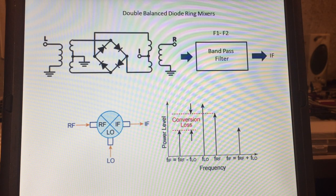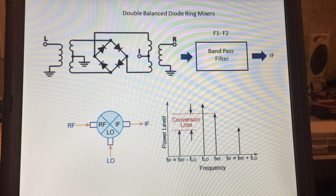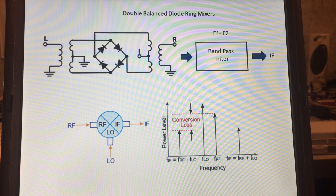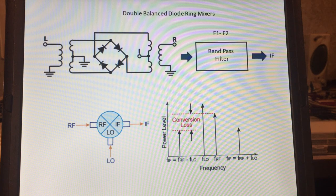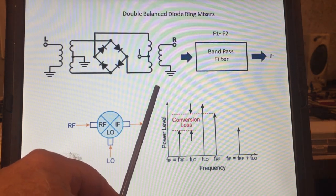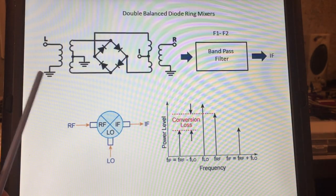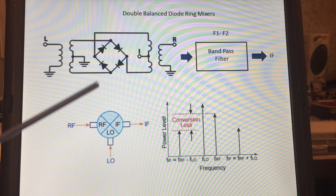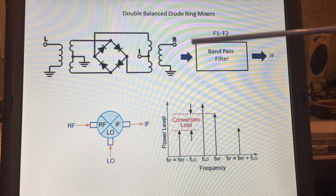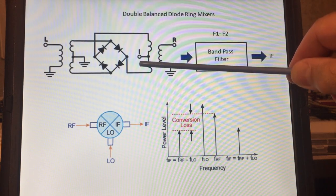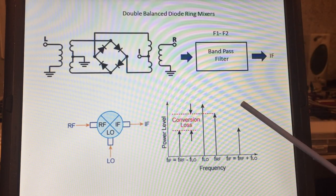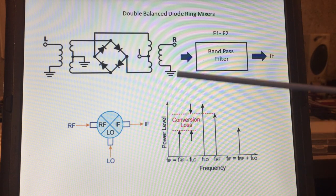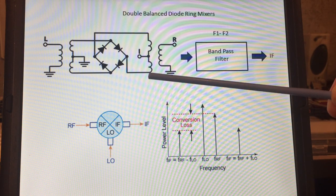Now the next topic is a passive mixer — a very popular design available in pre-packaged form or with discrete components — called the double balanced diode ring. On the input side we have an input transformer, on the output side an output transformer, and in the middle a diode ring. During the positive amplitude of the sine wave one pair of diodes conducts; during the negative transition the other pair conducts, and these are mixed with the RF signal to produce the intermediate frequency.